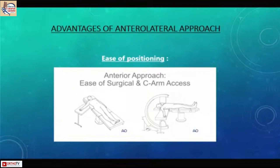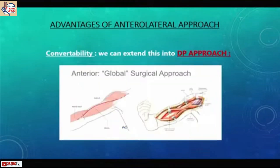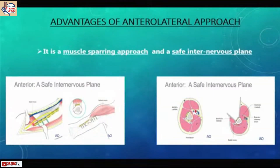Anterior approach advantages: the position allows comfortable 60-degree abduction, you can sit and operate. It is very useful for access to imaging and for moving the C-arm around the patient to get a good intraoperative picture. Another advantage is convertibility — whenever needed, we can convert into a deltopectoral approach through small submuscular windows.